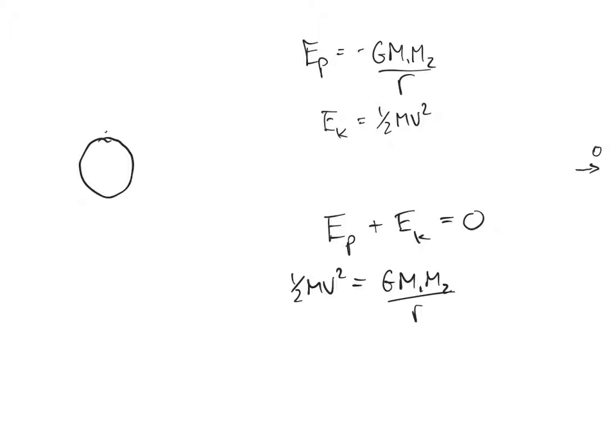And we can rearrange this equation. This is our object. If we make one our object, they cancel. The half, we multiply this side by 2, we have to do the same over here. So we end up with V² equals GM₂ times 2 divided by R. This is the velocity that's needed.